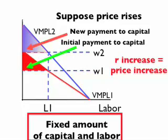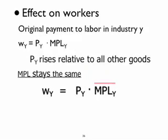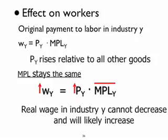It may be easier to look at this in terms of simple equations. Consider an industry Y. The original wage equals the price times the marginal productivity of labor. The price of Y then rises relative to all other goods in the economy — perhaps because of a change in consumer demand, tax policy, or trade. Since capital and labor are fixed, the marginal productivity of labor stays the same. As the price of Y goes up, it drives up the wage in Y by the same proportion. Workers' nominal wage goes up; they can buy as much Y as before, but they can buy more of other goods — their real income cannot decrease.